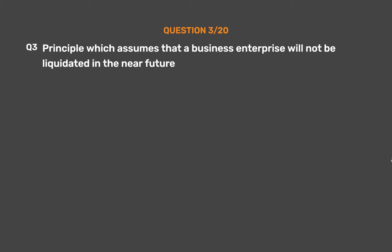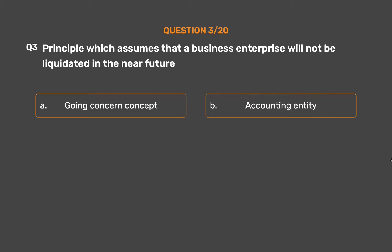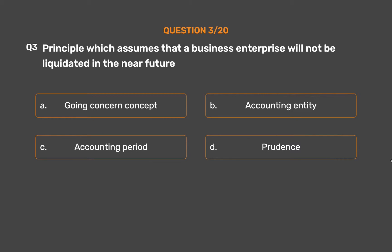Question No. 3: Which principle assumes that a business enterprise will not be liquidated in the near future? Option A: Going Concern Concept. Option B: Accounting Entity. Option C: Accounting Period. Option D: Prudence.